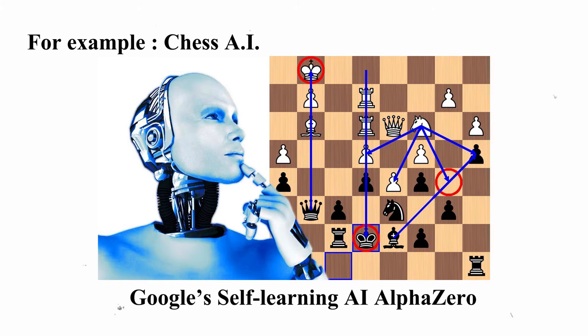A chess AI, for example, is hard to defeat, but it is impossible to ask it to drive a car. It just doesn't know what a vehicle is or how it operates on the streets. It knows only about the pieces on the board, the moves that can be taken by each piece, and the result of each move.